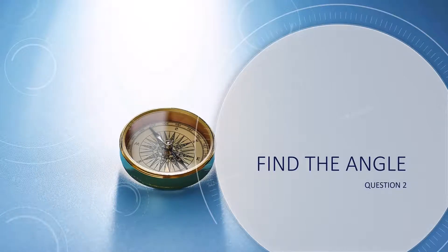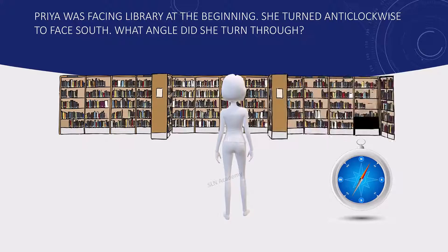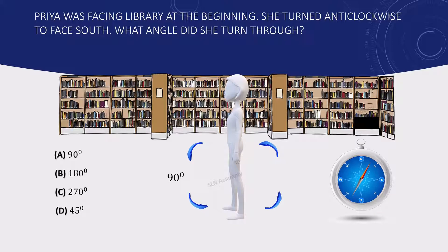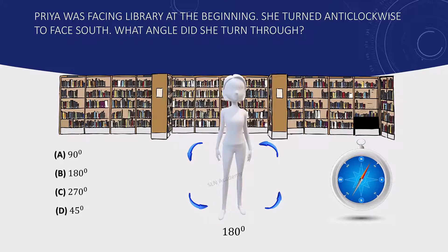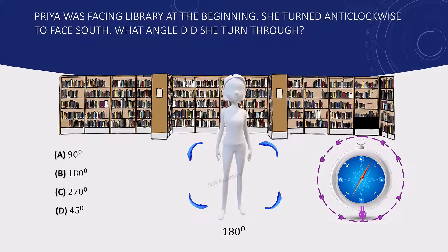Question 2: Find the angle. Priya was facing the library at the beginning. She turned anticlockwise to face south. What angle did she turn through? Options: A — 90 degrees, B — 180 degrees, C — 270 degrees, D — 45 degrees. If she turns anticlockwise 90 degrees, she faces west. Another 90 degrees anticlockwise brings her to a total of 180 degrees, facing south. So the answer is Option B, 180 degrees.